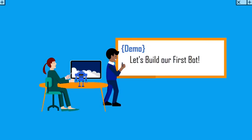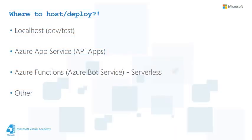To host and deploy our bot, we have different options. The first is localhost, the same as we saw in the demo — mainly used for Dev and Test. The second option is to use Azure App Service or API apps, as we'll see in the next demo. The third option is Azure Functions or going serverless, which is the way to go when we talk about Azure Bot Service — we'll discuss this in our last module. There are also other options like a virtual machine or other cloud platforms.